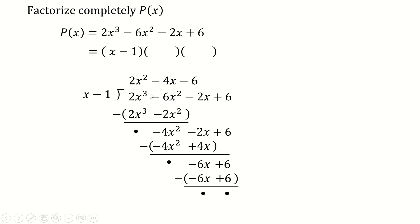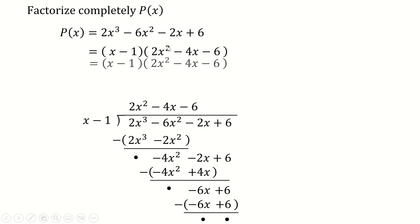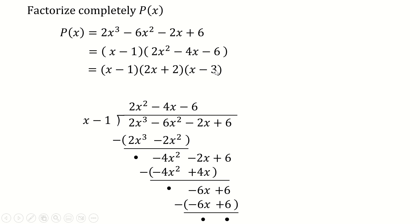The quotient from the long division is 2x² - 4x - 6, which gives us the other two factors. Factorizing 2x² - 4x - 6 gives (2x + 2)(x - 3). We can also factor out 2 from (2x + 2), so the complete factorization of p is 2(x - 1)(x + 1)(x - 3).